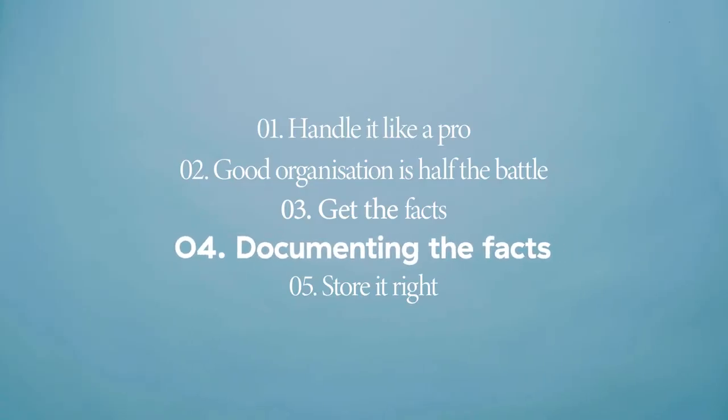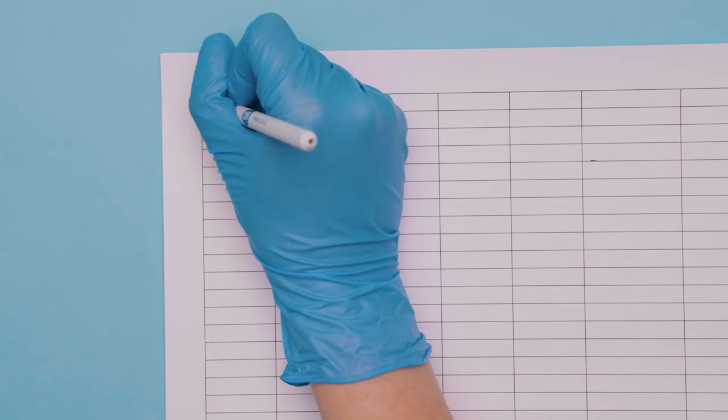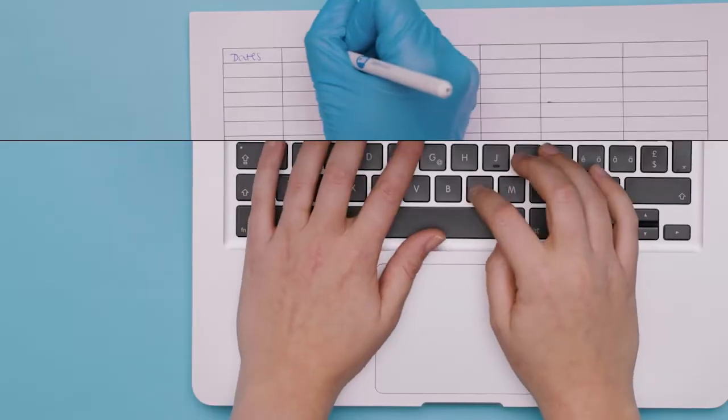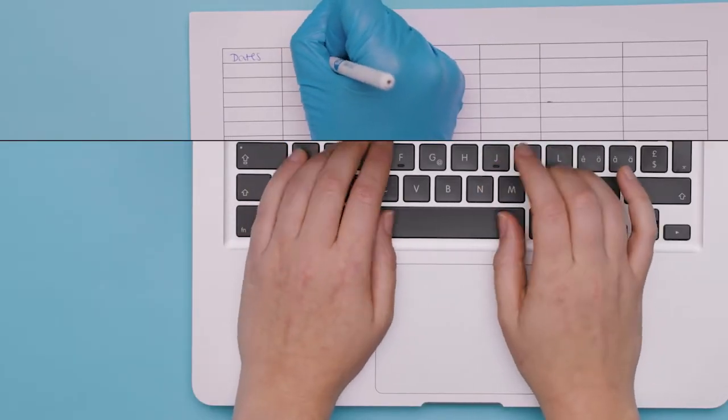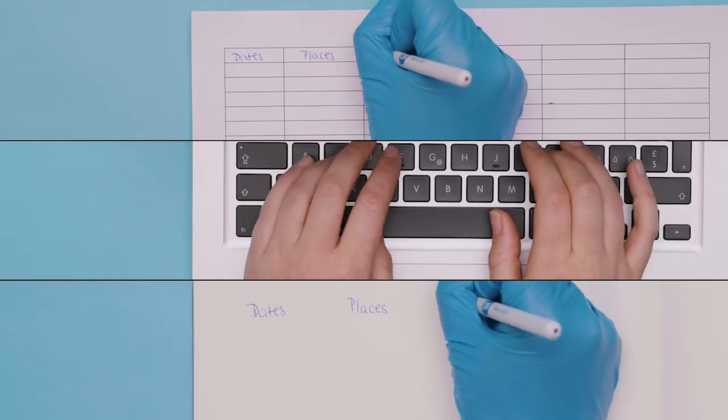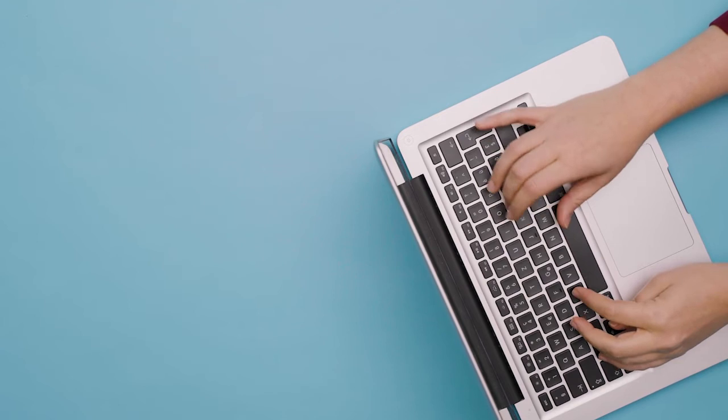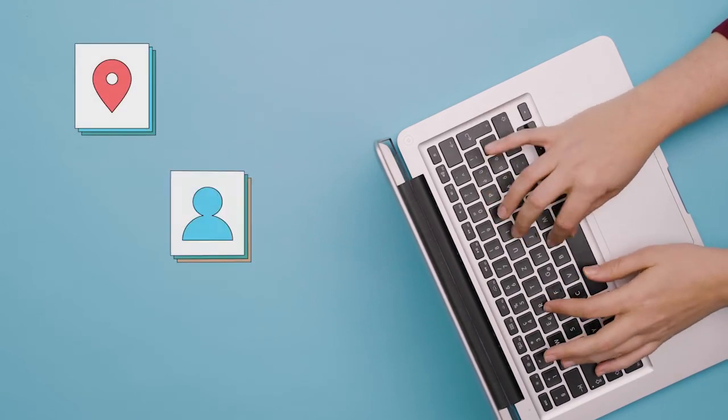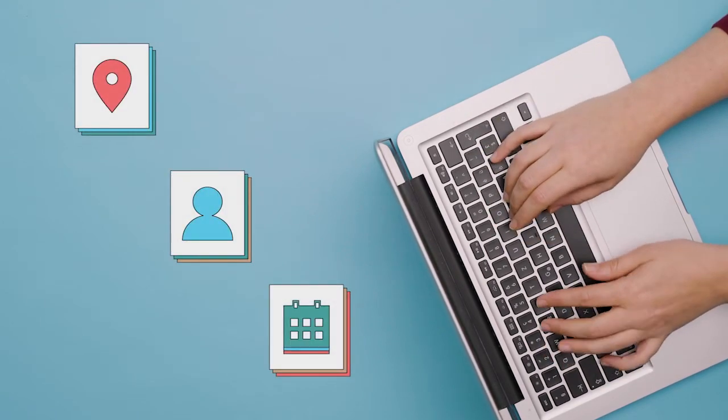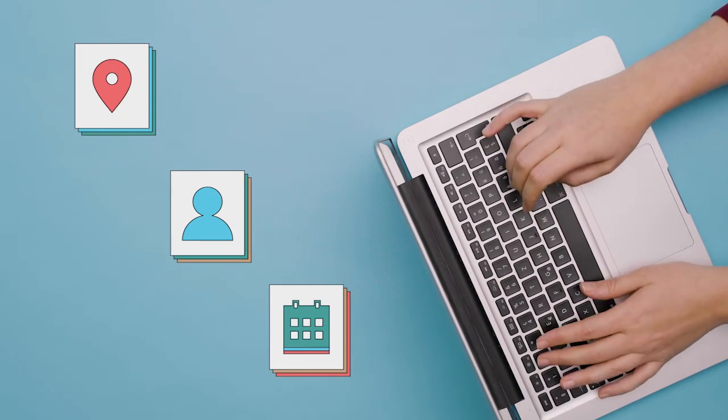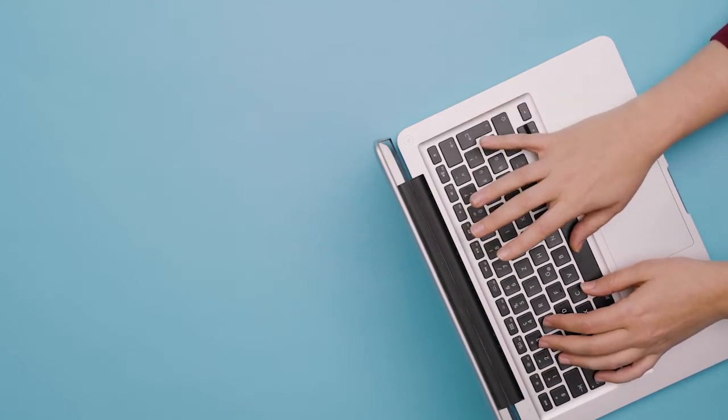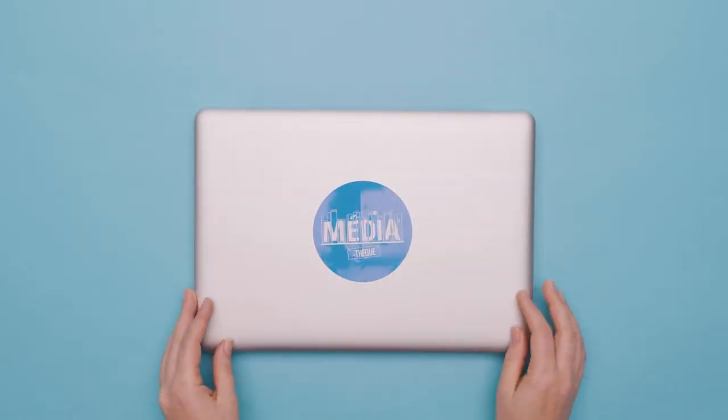Four. Documenting the facts. Make sure to write down all the information you have. You can use any type of spreadsheet as long as you document the information the same way each time. All the information you gathered, from places to faces and dates, write them down and establish an inventory. Trust us. Professional archivists and anyone looking at your documents will thank you for it.